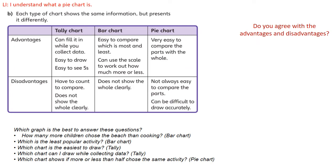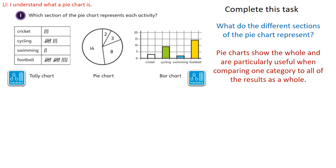And there you've got the answers there. Okay let's have a look at this task. Which section of the pie chart represents each activity? So we've got a tally chart here, we've got the pie chart, and we've got a bar chart. So what do each of the sections represent? In the pie we've got the numbers of children doing each of the activities, and it shows us the whole number of children in total.